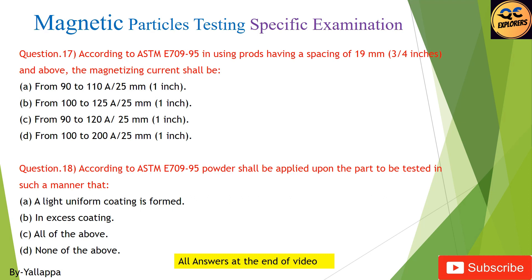Question 18: According to ASTM E709-95, powder shall be applied upon the part to be tested in such a manner that: (A) a light uniform coating is formed; (B) in excess coating; (C) all of the above; (D) none of the above.